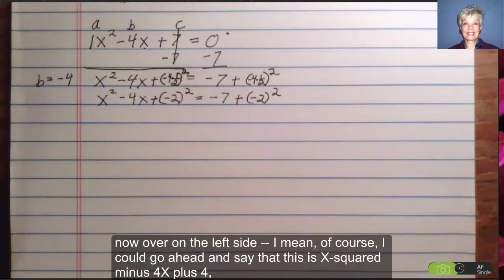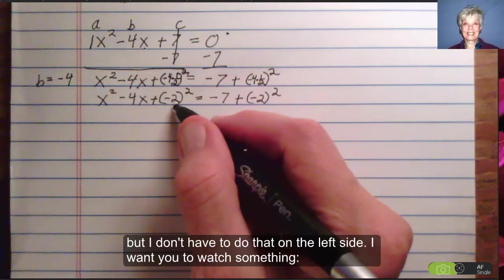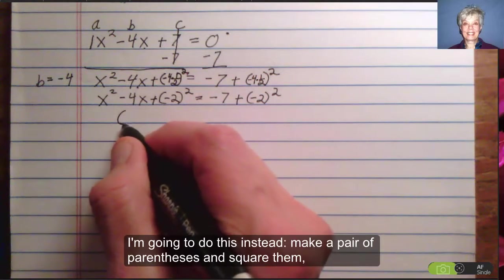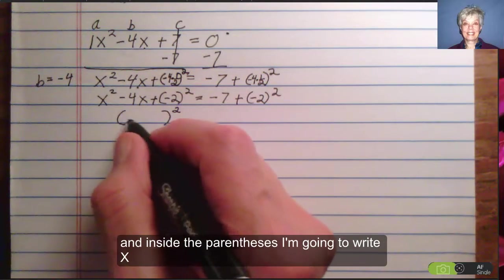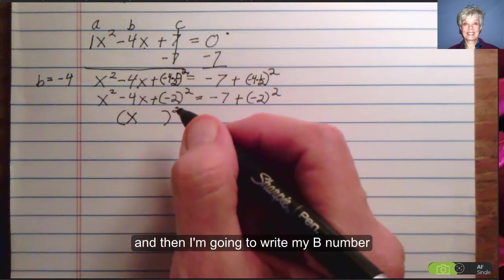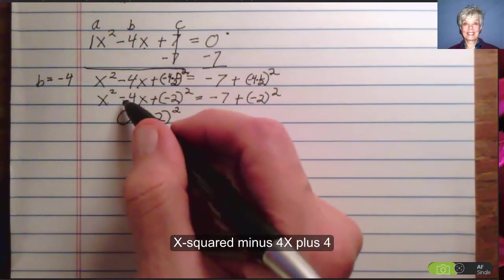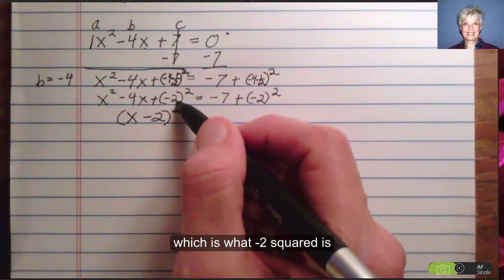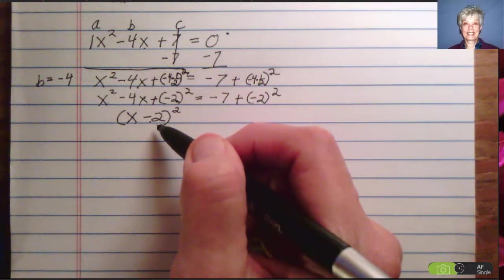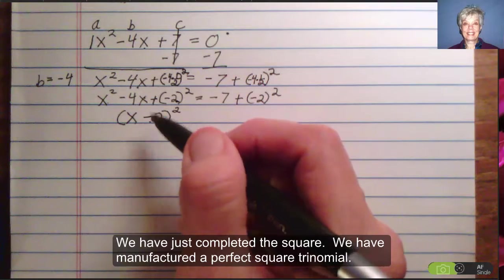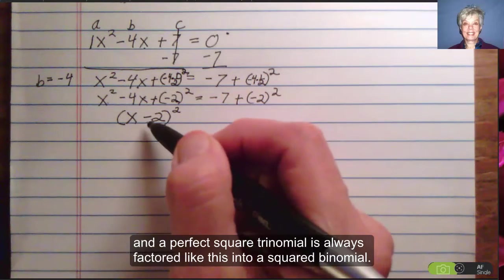Now over on the left side, I mean of course, I could go ahead and say that this is x squared minus 4x plus 4, but I don't have to do that on the left side. I want you to watch something. I am going to do this instead: make a pair of parentheses and square them, and inside the parentheses I'm going to write x, and then I'm going to write my b number minus 2. x squared minus 4x plus 4, which is what negative 2 squared is, factors into x minus 2 squared. We have just completed the square. We have manufactured a perfect square trinomial, and a perfect square trinomial is always factored like this into a binomial squared.